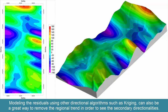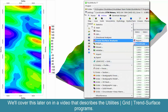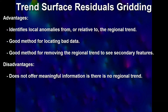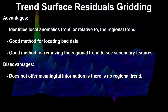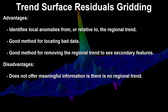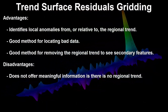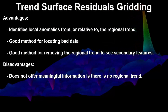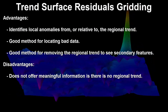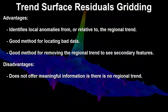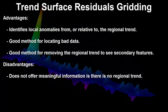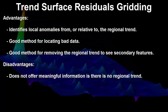Examining the anomalous residuals is a great way to find bad data, such as transposed digits within the z values or transposed coordinates. Modeling the residuals using other directional algorithms, such as kriging, can also be a great way to remove the regional trend in order to see the secondary directionalities. Advantages: trend surface residuals identifies local anomalies relative to the regional trend, is good for locating bad data, and is a good method for removing the regional trend to see secondary features. Disadvantages: it does not offer meaningful information if there is no regional trend.